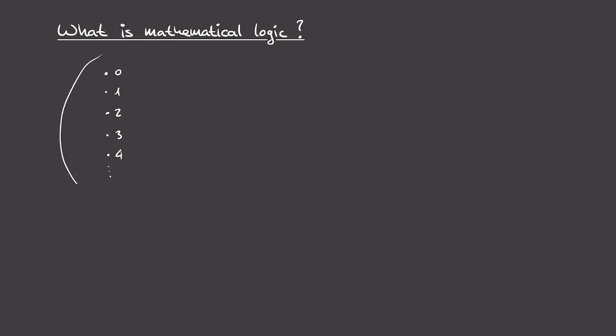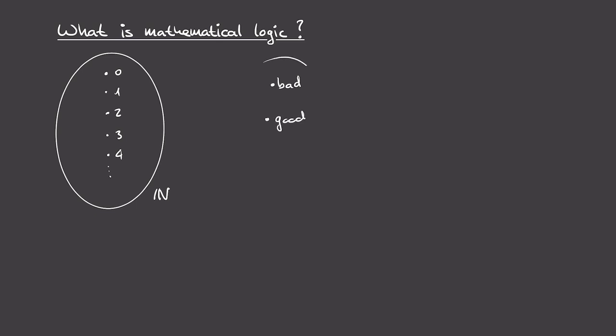We're considering this set of natural numbers without any additional structure. And because in our world everyone's super into numerology, we have very strong opinions about these numbers. In fact, we're going to say that certain of these numbers are good and certain are bad. So we have our set of values, namely bad and good.